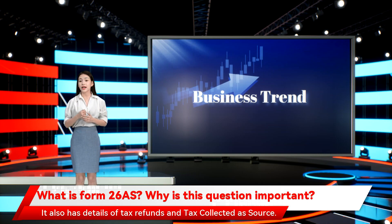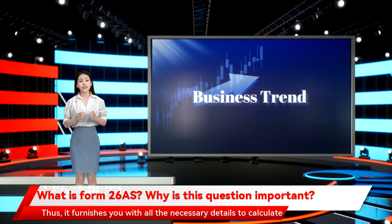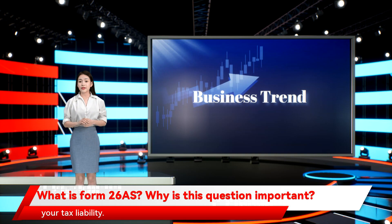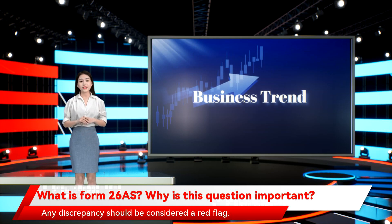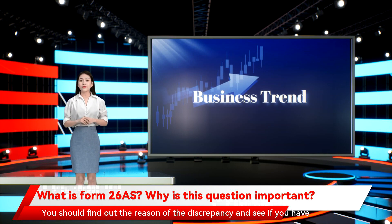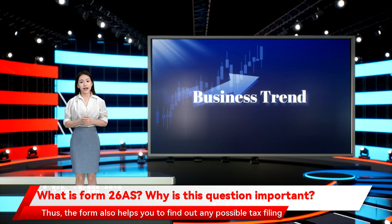It also has details of tax refunds and tax collected at source. Thus, it furnishes you with all the necessary details to calculate your tax liability. You should use Form 26AS to prepare your tax return. The tax details in Form 26AS and your income tax return should match. Any discrepancy should be considered a red flag — you should find out the reason and see if you have made any mistakes. Thus, the form also helps you to find out any possible tax filing mistakes.